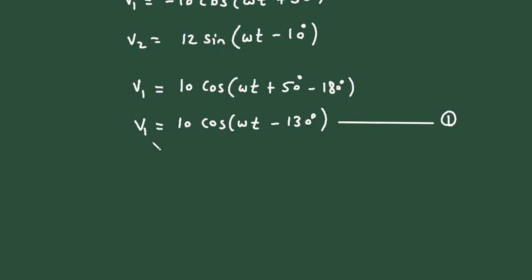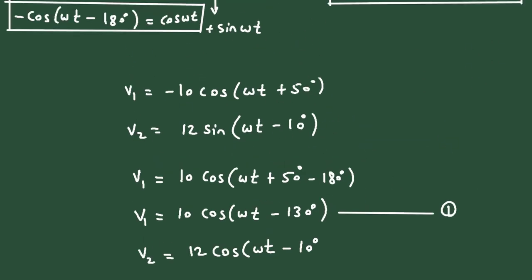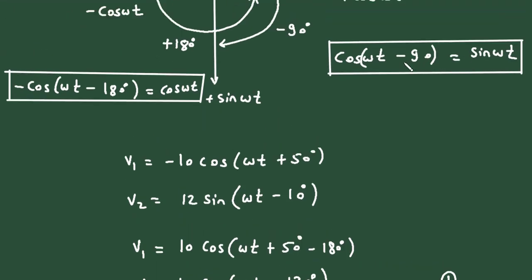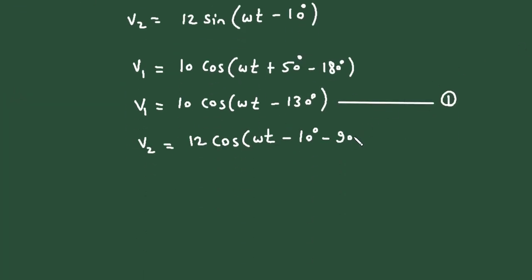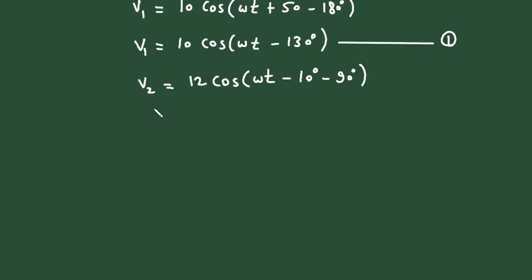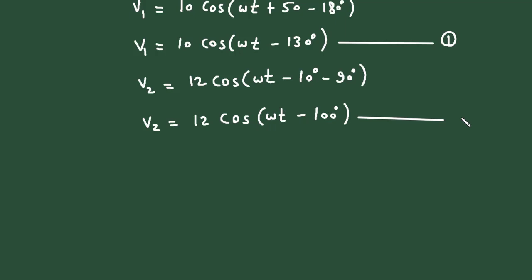For V2, with amplitude 12, we replace the sine with cosine of (ωt - 10°), and since we changed sine to cosine we add minus 90°. So V2 = 12 cos(ωt - 100°). This is equation number 2.